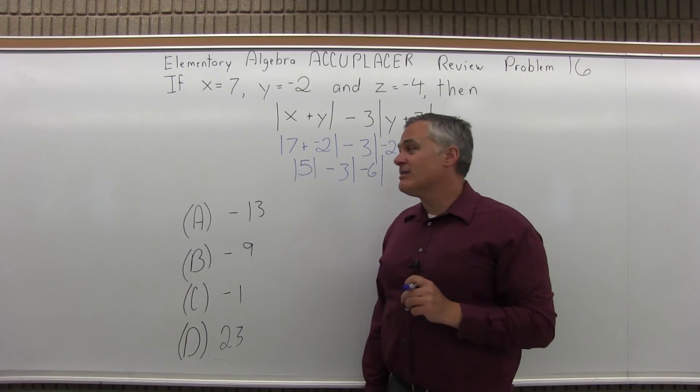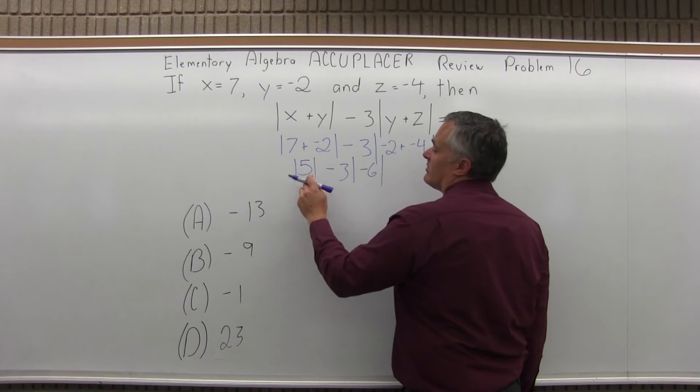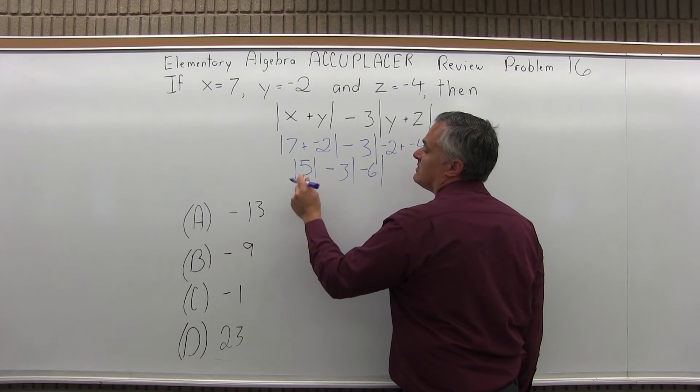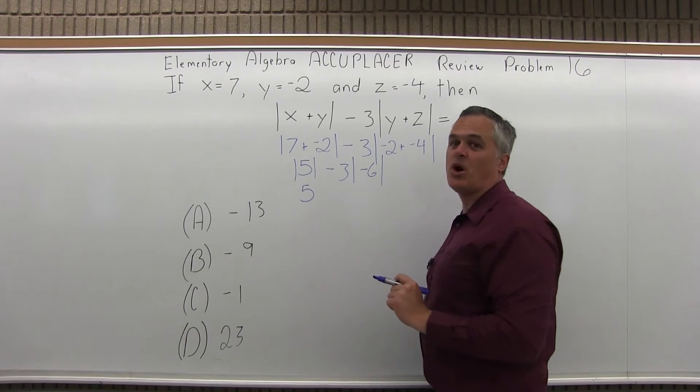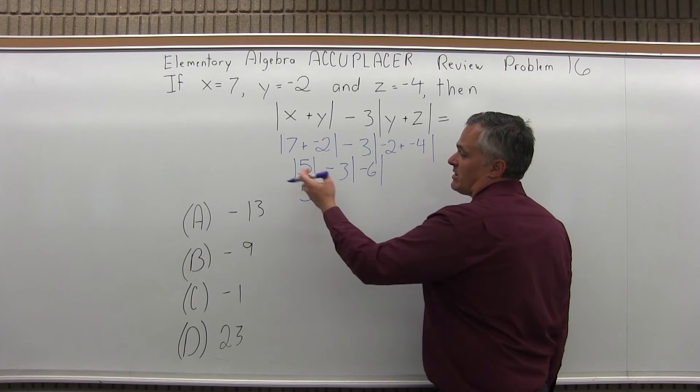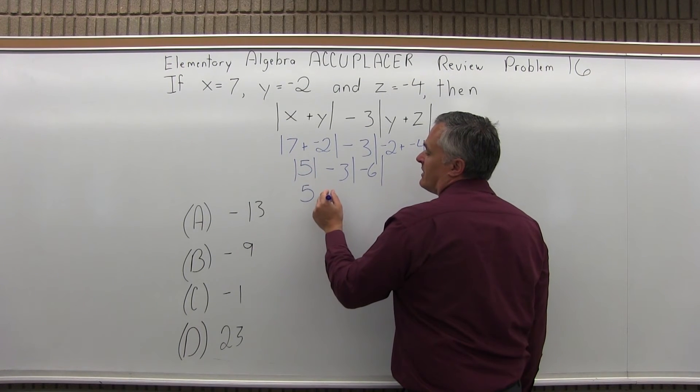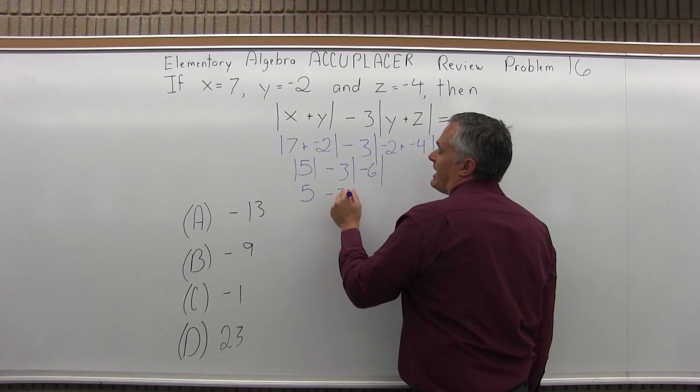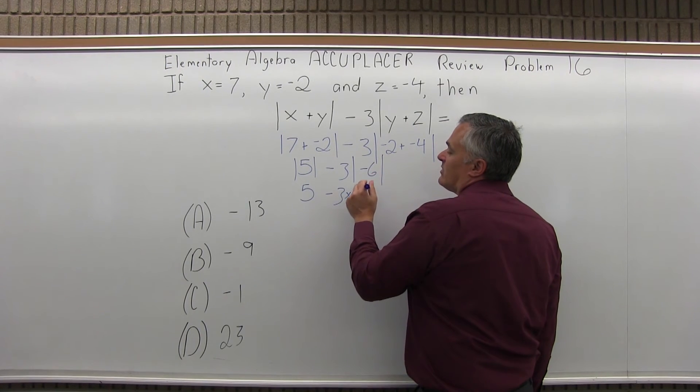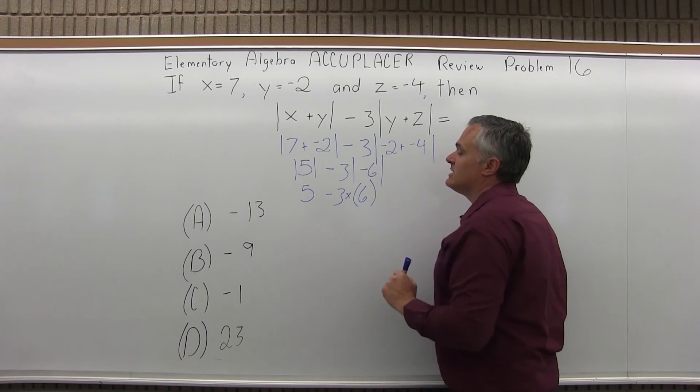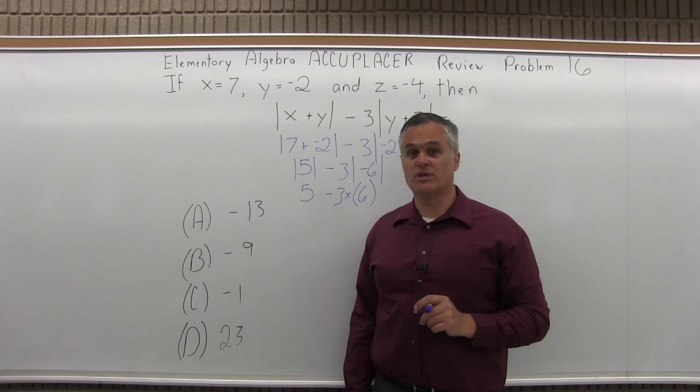Let's undo the absolute value now. Absolute value of 5 is just 5. Absolute value means keep the number the same, make sure the answer is positive. So, same number, it was positive anyway, and I'm going to have minus 3 times, the absolute value of negative 6 is positive 6, so it's going to be 3 times 6.